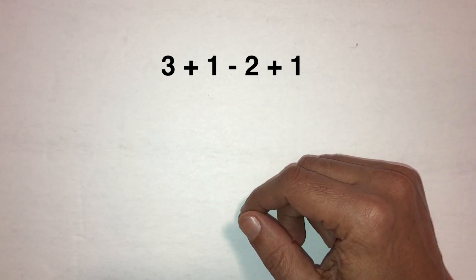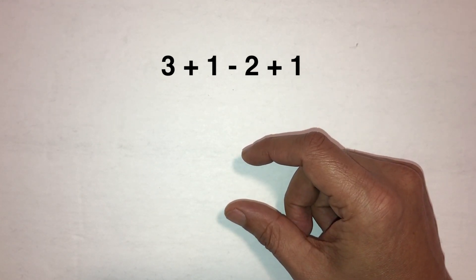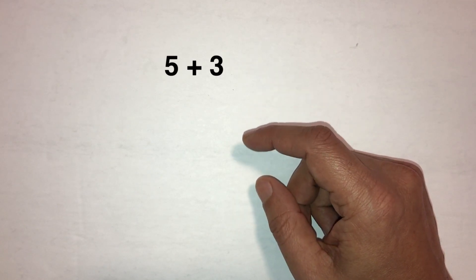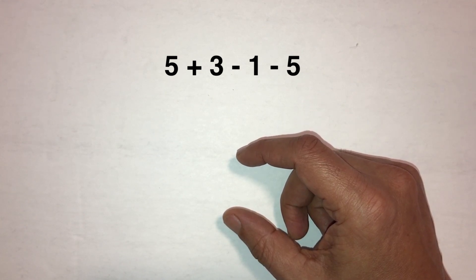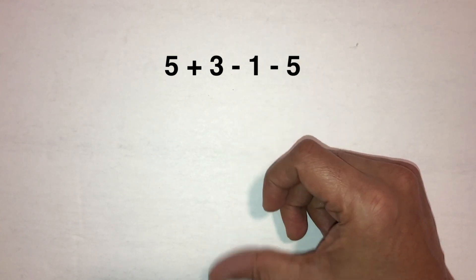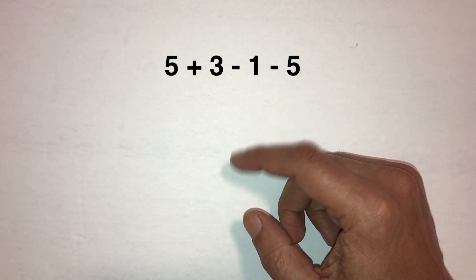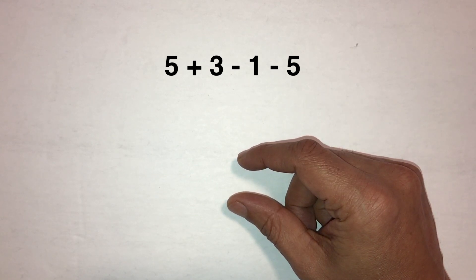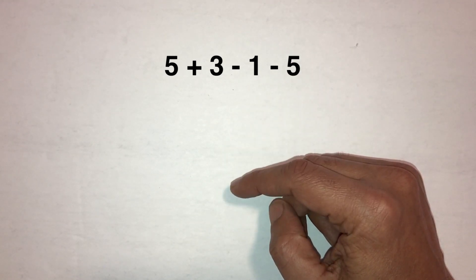Now let's bring in the upper beads. Let's do 5 plus 3 minus 1 minus 5. So 5 plus 3, we got 8. Take away the 1, take away the 5, you've got a 2 touching the answer bar. Let's do that again: 5 plus 3, take away 1, take away the 5, the answer is 2.